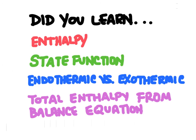So to recap everything in this video: enthalpy is the heat going into or out of a system. Enthalpy is a state function, meaning we're only concerned with the starting and ending enthalpy amounts. Endothermic means heat entering the system and exothermic means heat exiting the system. And we can determine the enthalpy of a chemical reaction by using a balanced chemical equation.